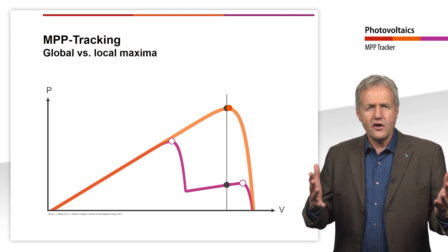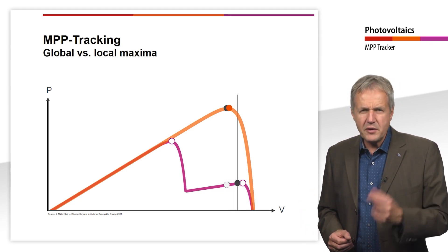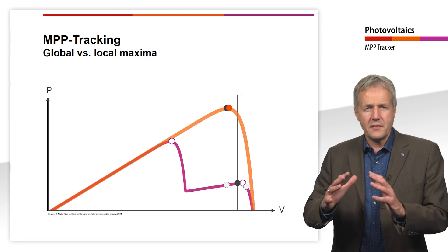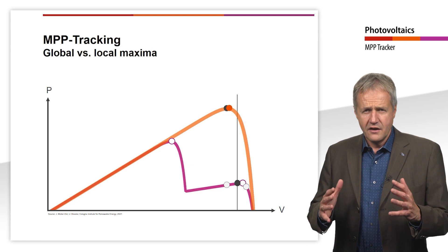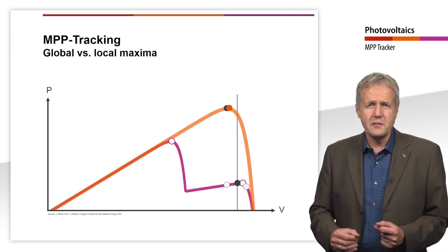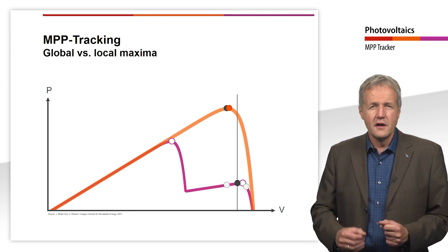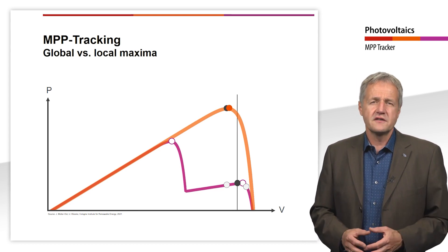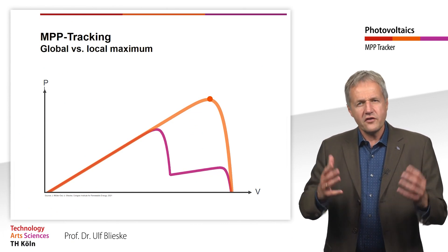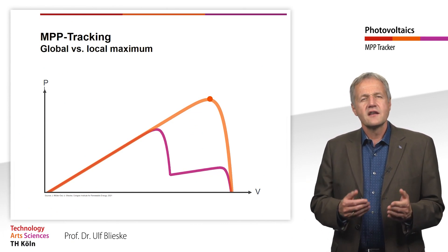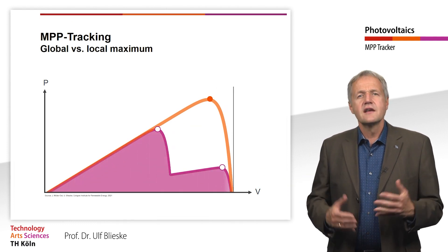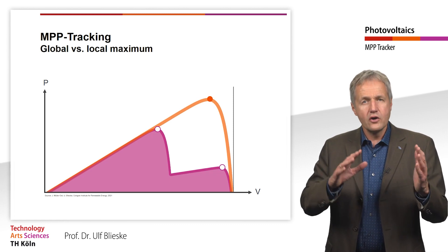If there is shading on the PV module, then the MPP tracker levels itself at a lower local maximum using the method just described, and to a certain extent sticks to it. The actual maximum power point, the global maximum, is not found in this case. MPP trackers, which can also be used for shaded PV systems, therefore scan the entire IV curve at regular intervals in order to search for a global MPP.